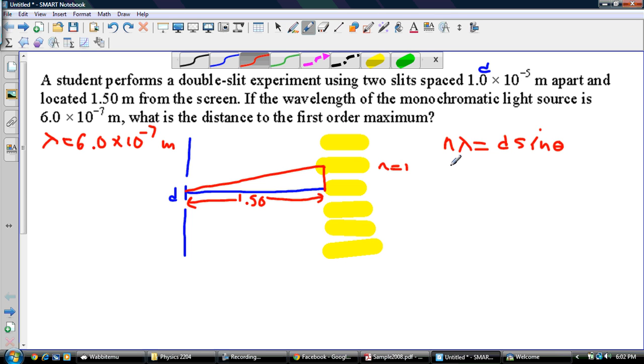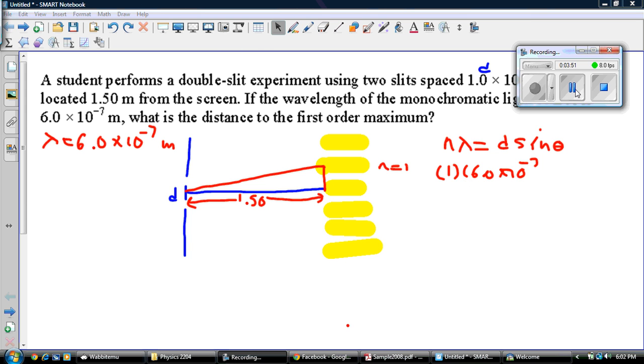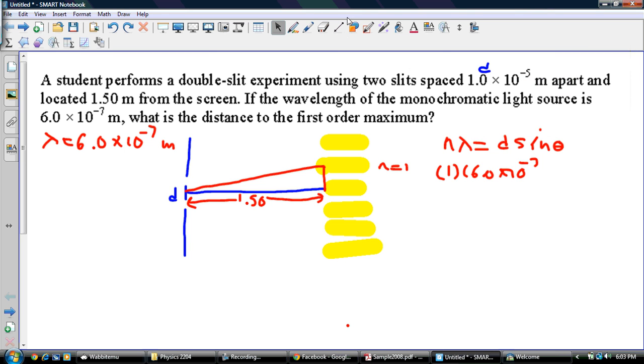So we're looking for the distance to the maximum. We're not going to find it yet. So I know my n is 1. My lambda is 6.0 times 10 to the negative 7. I think I'm going to have this formula backwards. Just one second. Sorry about that, guys. I don't really know what I was thinking there. That is correct.